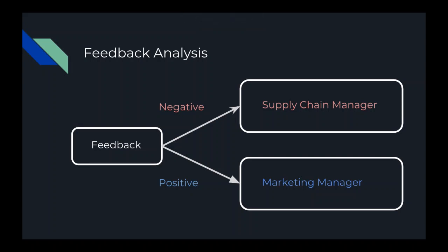When feedback comes in from customers, if it's negative, you want to send that to your supply chain manager — especially if it's recurring, like 'these screws are cheap and the metal is stripping.' If that keeps coming up, tell your supply chain manager to switch vendors because you don't have a quality product. On the flip side, if feedback is positive, send it to your marketing manager, because that's your unique value proposition.